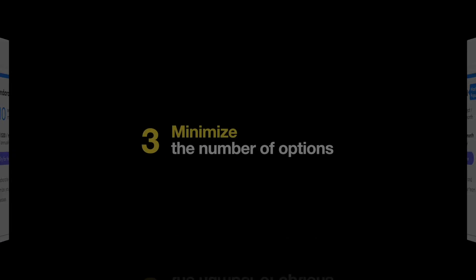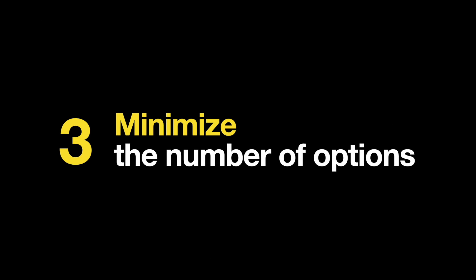Third, you want to minimize the total number of options users have to deal with. Remember our example with the TV remotes? We don't want to overwhelm our users with too many options. Hick's Law can be used to narrow down big volumes of information without overloading the user.